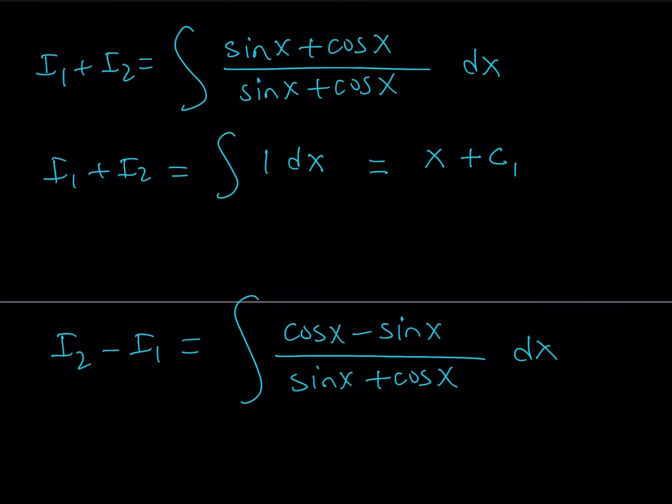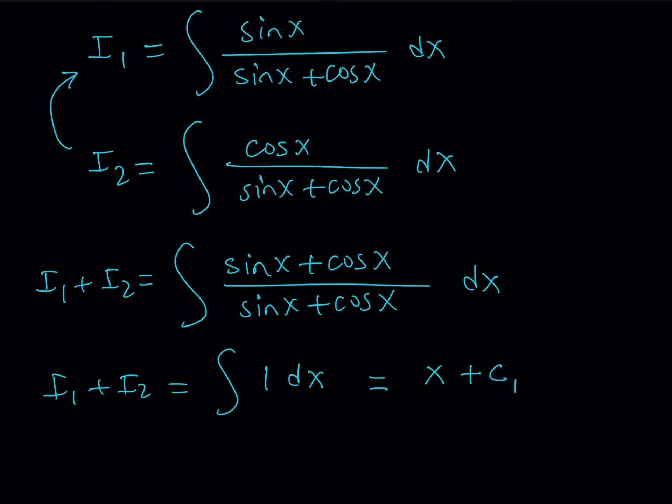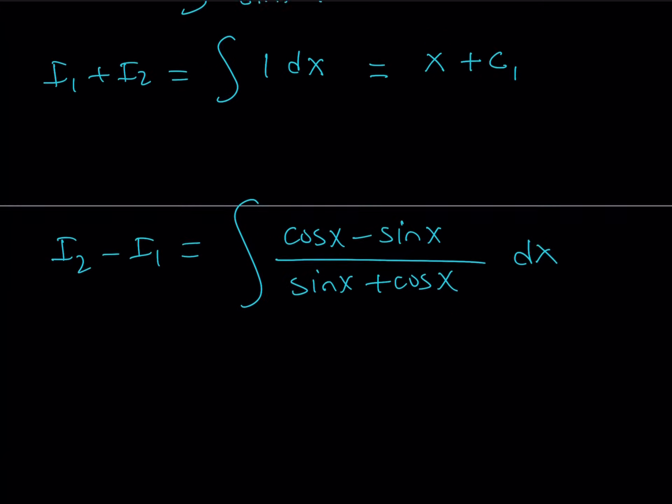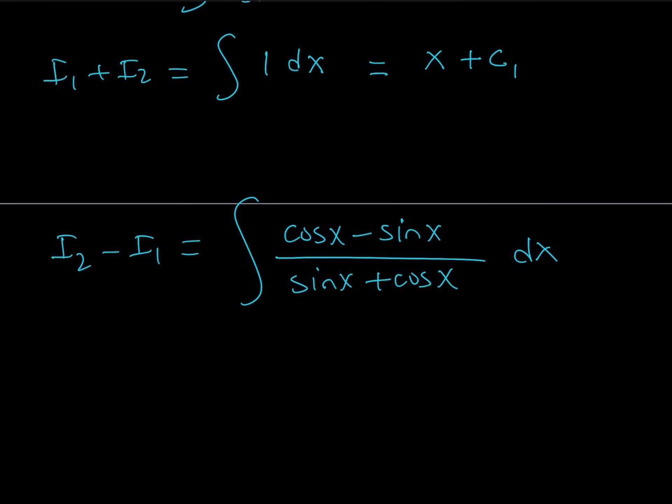So now what we're going to do is we're going to subtract i2 minus i1. And that is going to give us cosine x minus sine x over sine x plus cosine x dx. Because I can just subtract them. I have a numerator, I have another numerator, and then I have a common denominator. So now I got i1 plus i2 and I got i2 minus i1. So hopefully by solving this as a system, I can find i1 from here.